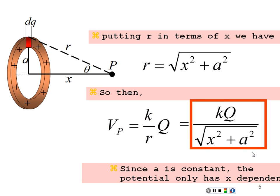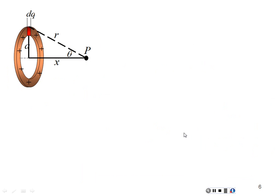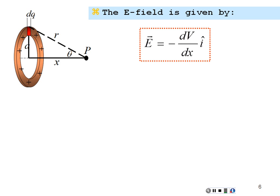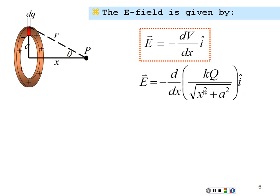We want to find the electric field due to this potential as a function of x, because x is the variable here. According to our negative gradient, the electric field is the negative derivative of the potential with respect to x. x is the only variable the E field depends on, so we only have to take the derivative with respect to x. Our potential is k q over the square root of x squared plus a squared, and we take the negative derivative with respect to x of that.